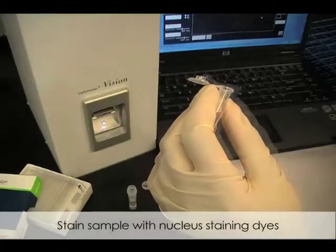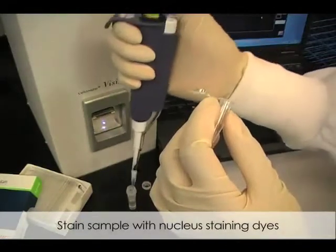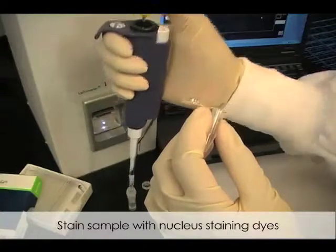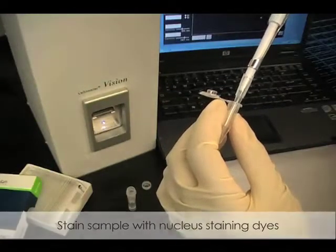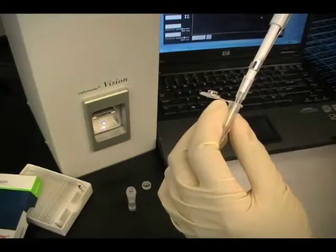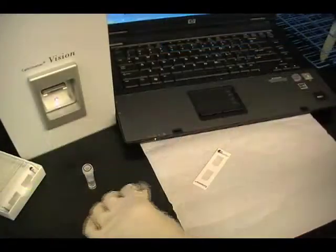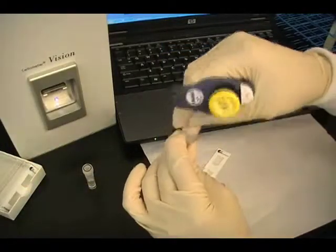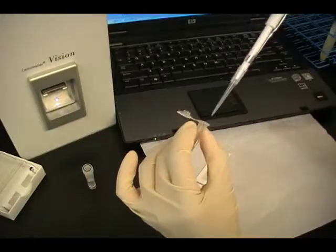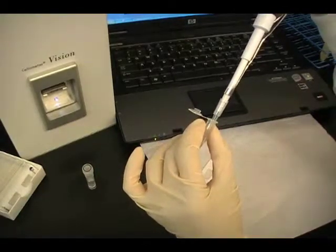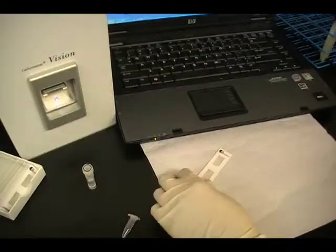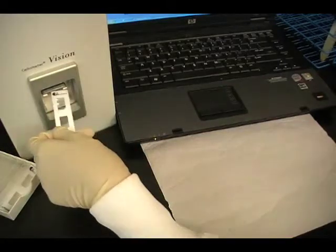Nucleus staining dyes are added to the corn mash sample. After incubation at room temperature for 1 to 2 minutes, 20 microliters of stained corn mash sample is loaded into a Cellometer counting chamber, which is inserted into the Cellometer Vision instrument.